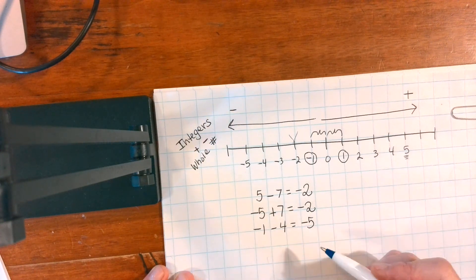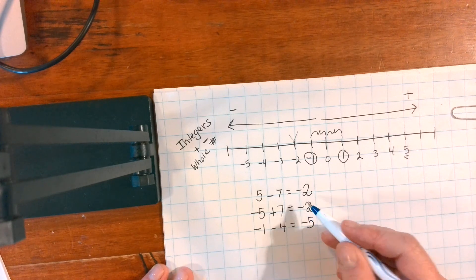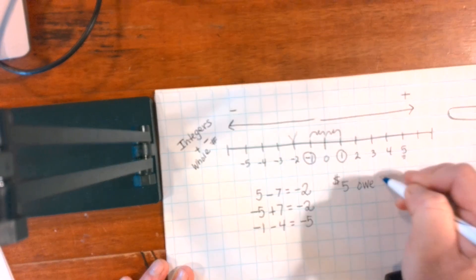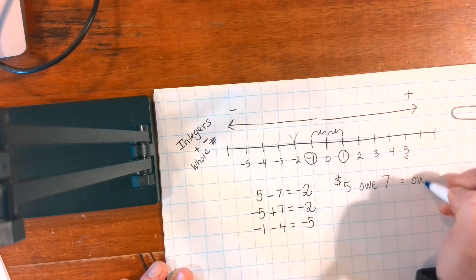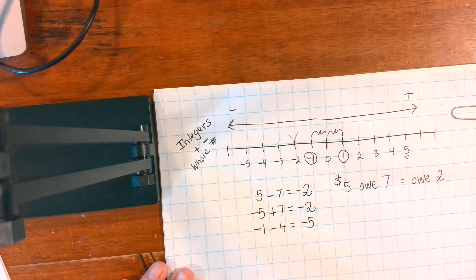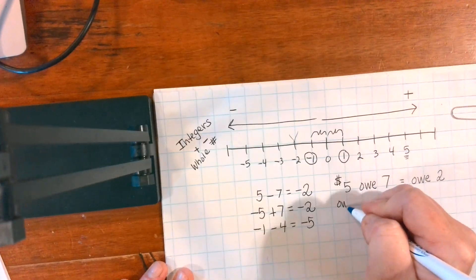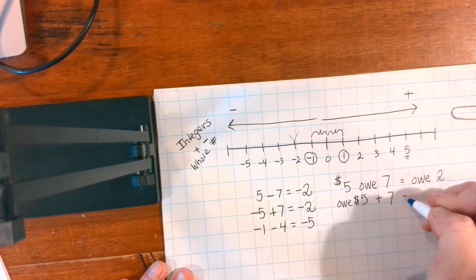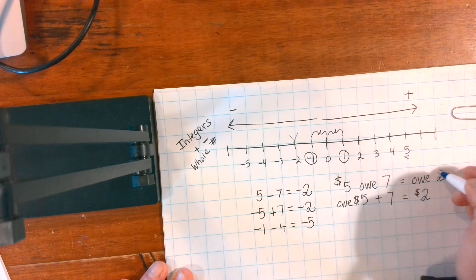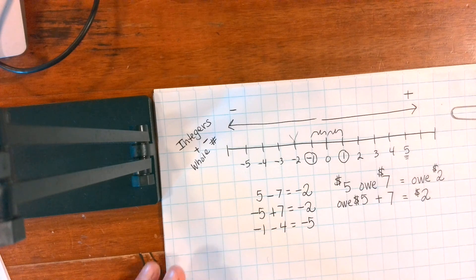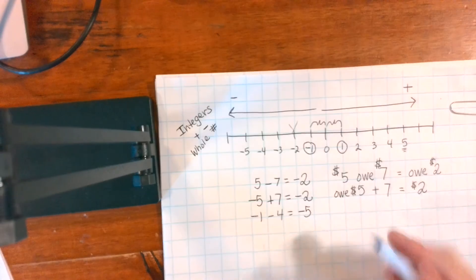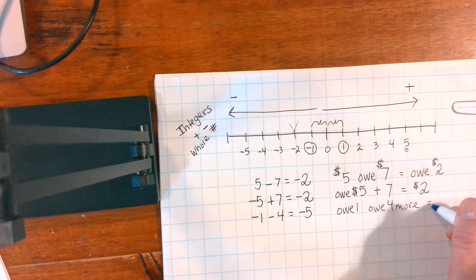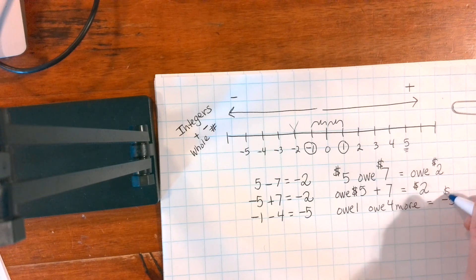Adding and subtracting is pretty simple. Another way to think about it is as money and debt. If I have five dollars and then I owe seven, now I owe two. Or if I owe five and then someone gives me seven, I'm left with two. Money is a great way to think about positive and negative numbers — if I owe one dollar and then I owe four more, now I owe five.